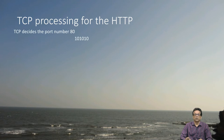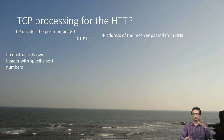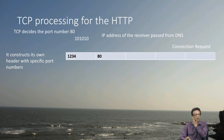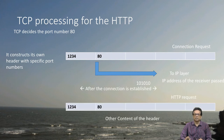TCP decides that port number 80 means the receiver is going to be a web server. The IP address of the receiver passed from DNS is passed along with it. TCP is not going to do anything with this IP address — it is passed further. TCP constructs its own header with the respective port number: 1234 is the sender's port number, 80 is the receiver's port number. This is called a connection request. TCP is connection-oriented — it begins with a connection request. After the connection is established, we will send data as well.